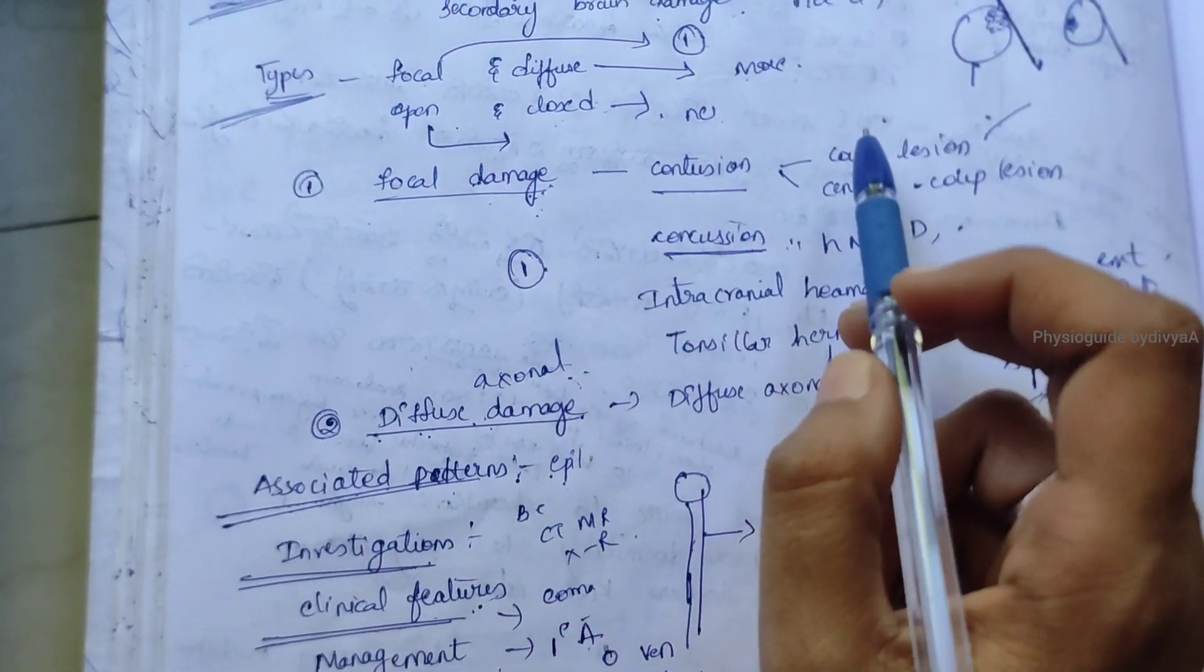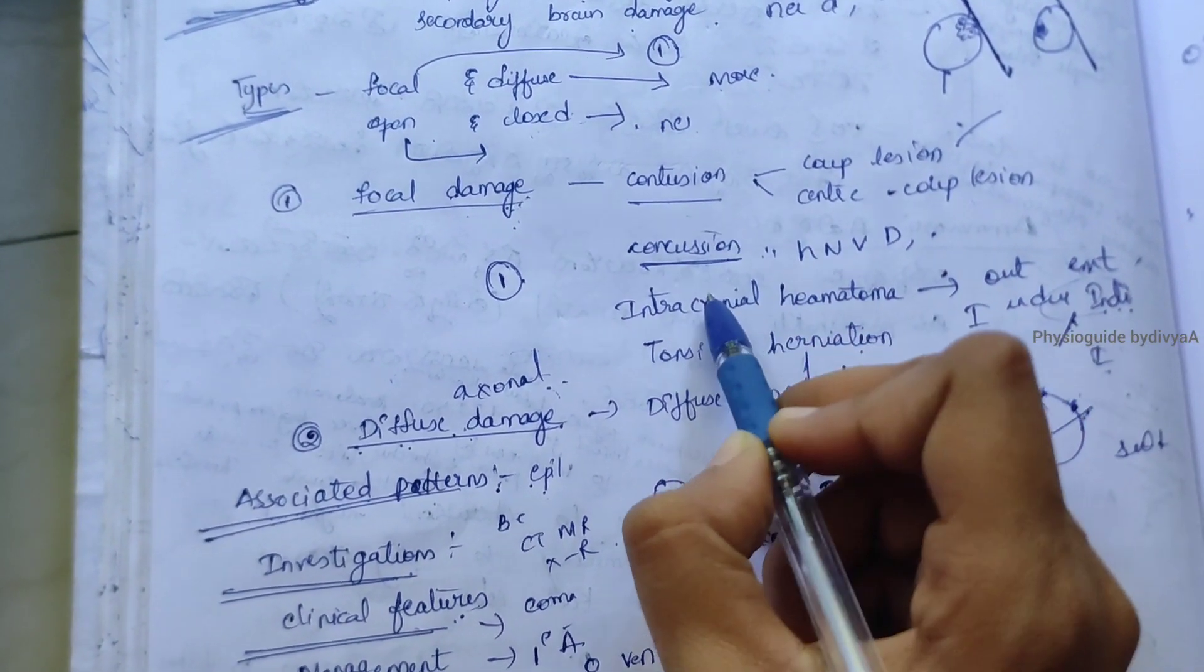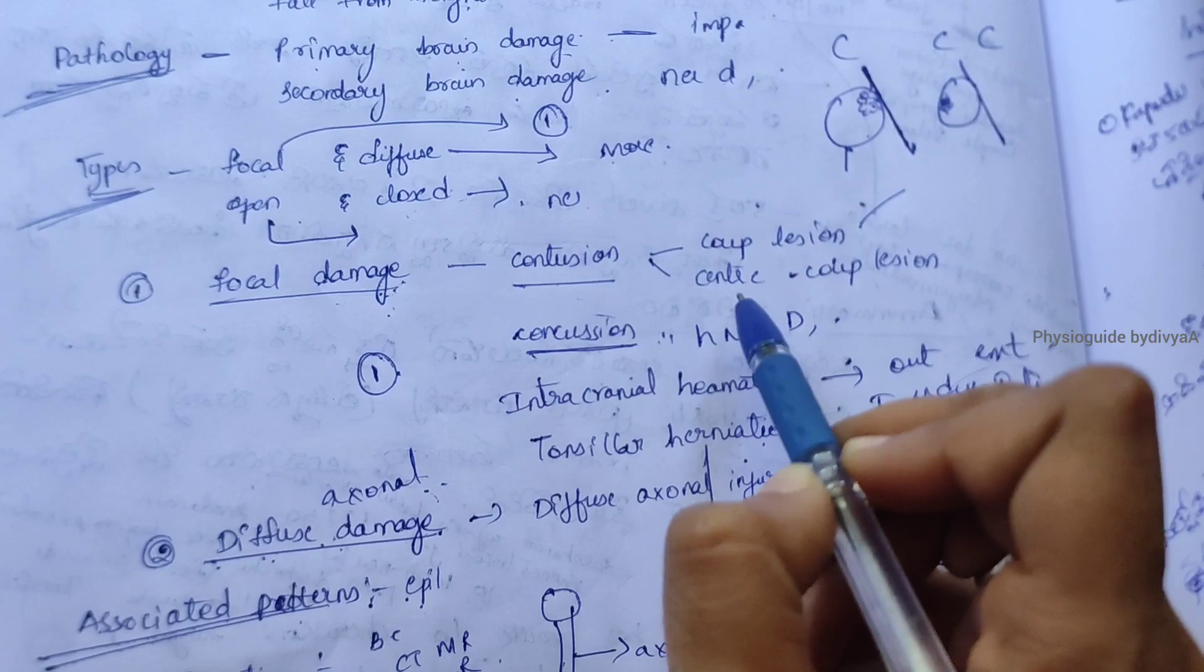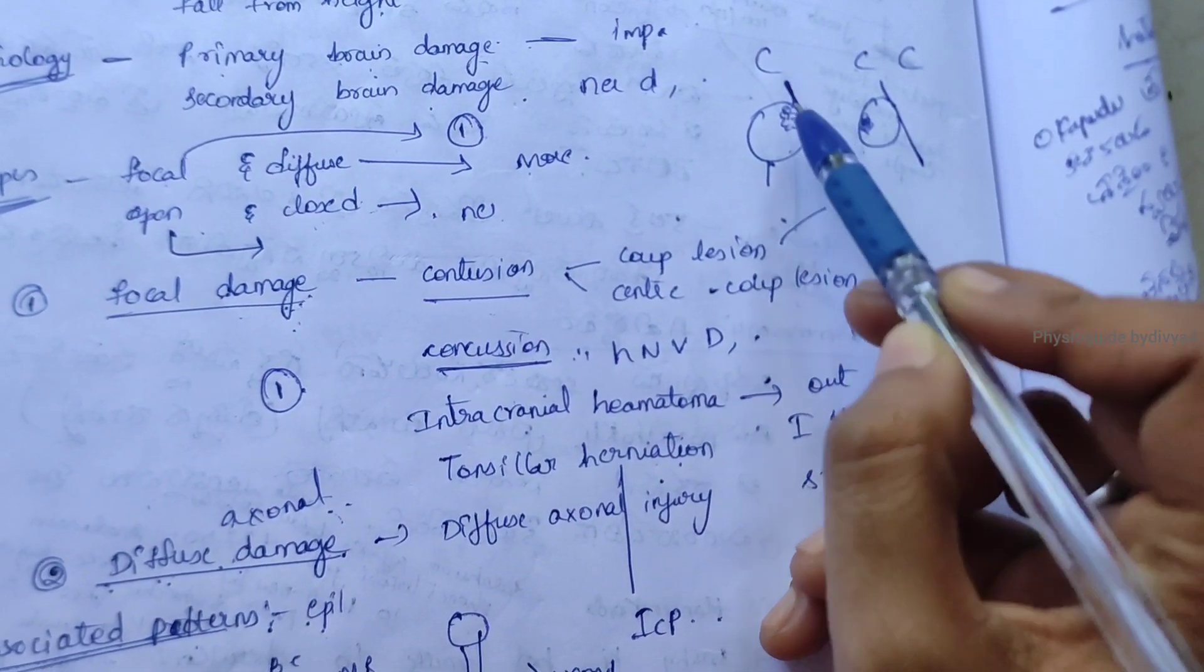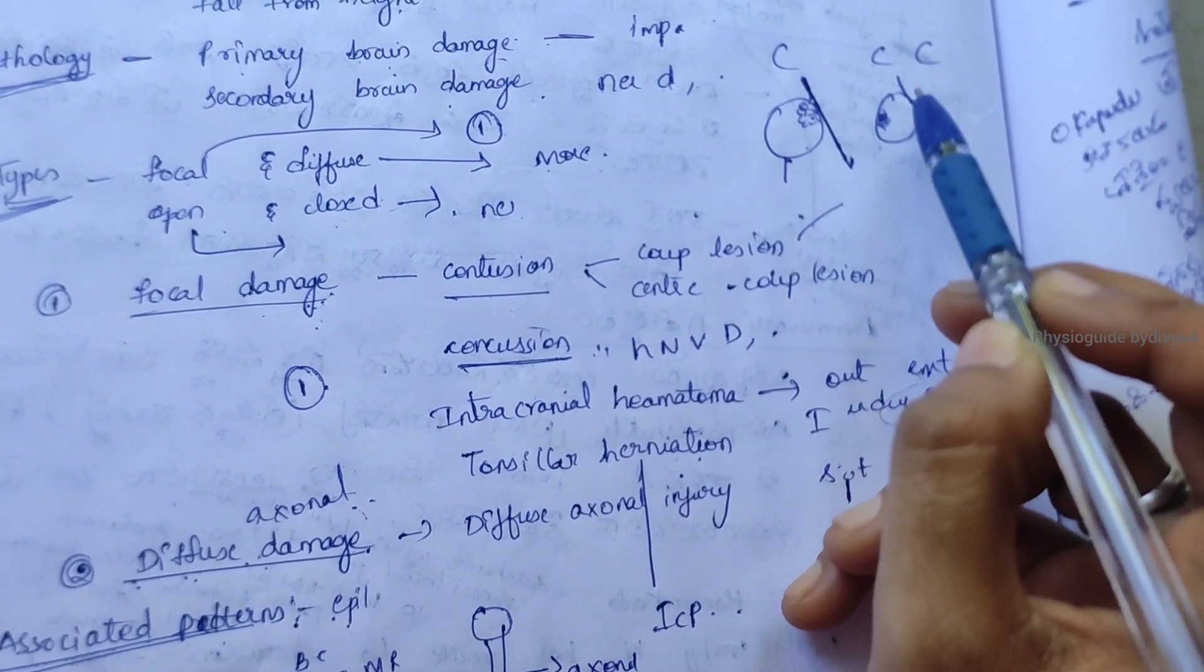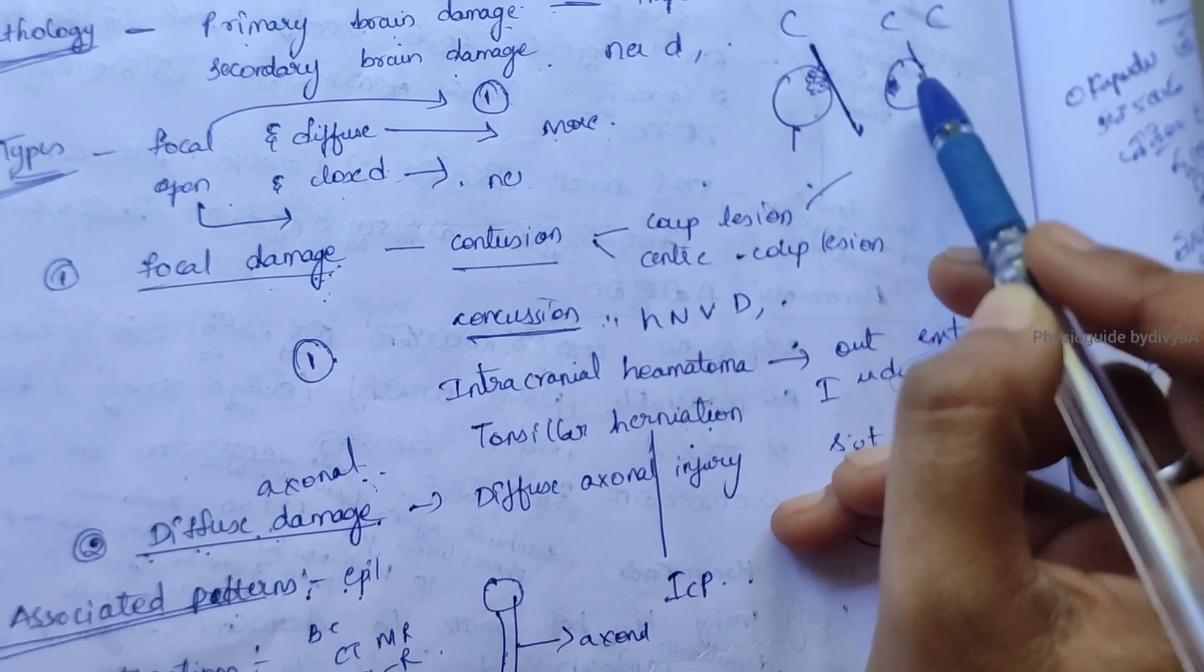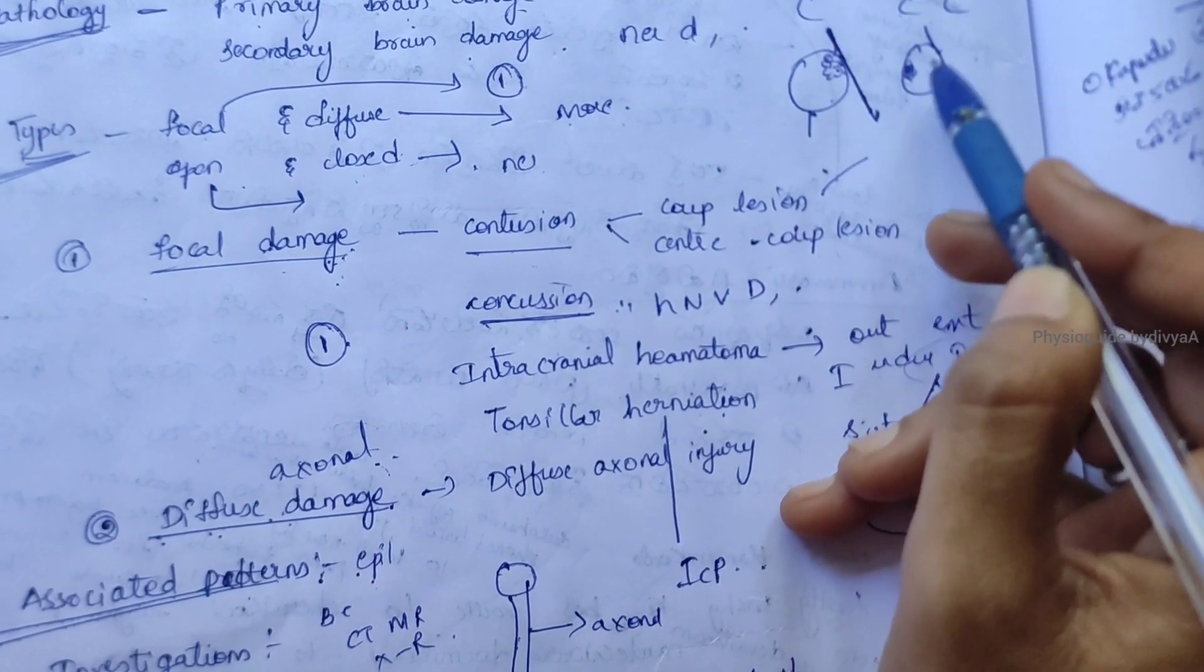Focal damage is divided into contusion, concussion, intracranial hematoma, and tonsillar herniation. Contusion has coup lesion and contrecoup lesion. Coup lesion means when a person is hit at the brain, they get injured at that point. In contrecoup lesion, if the person is hit at the forehead, pain and damage occur at the back side, the opposite side.